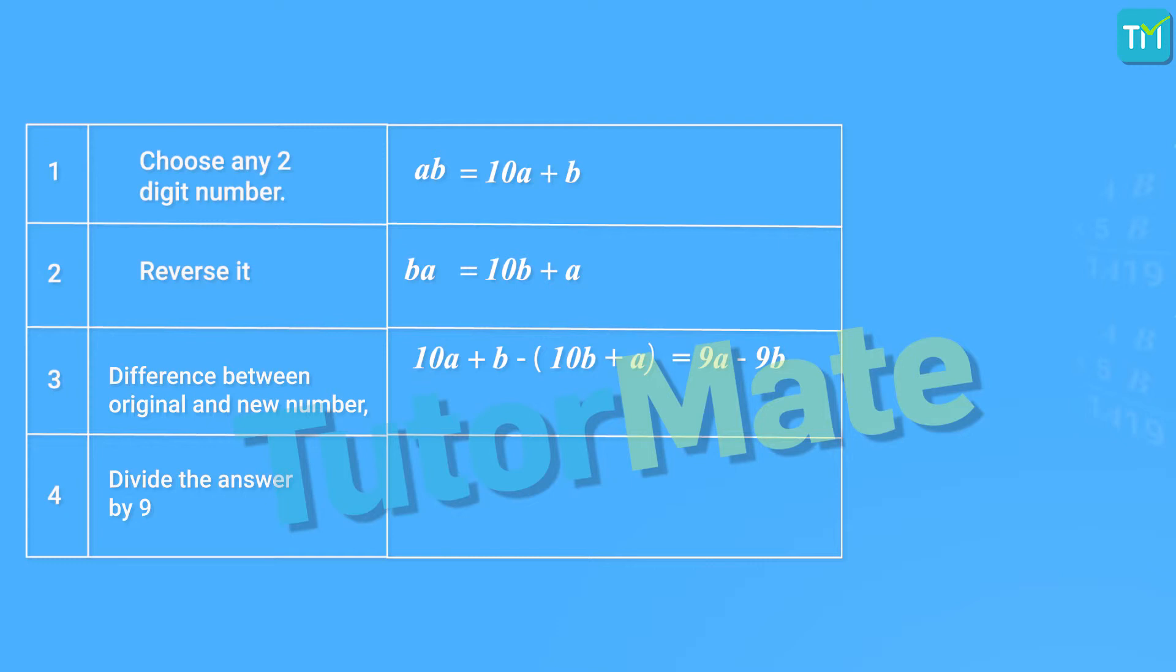In this difference, we can take 9 common. So, the difference will be 9 into bracket A minus B. Now, one thing to note here is that when we subtract 10B plus A from 10A plus B, we are assuming that AB is a bigger number as compared to BA. So, whenever we carry out the subtraction, we will ensure that we subtract the smaller number from the bigger one.